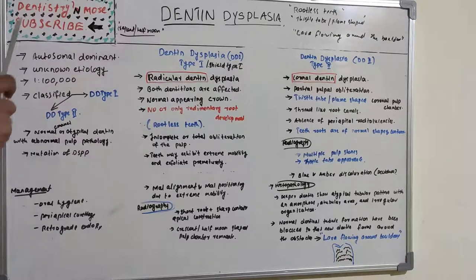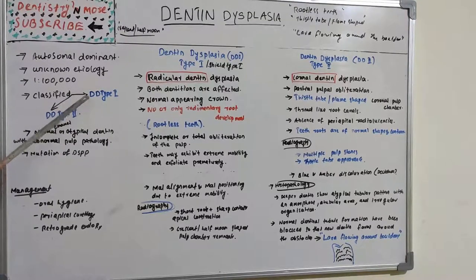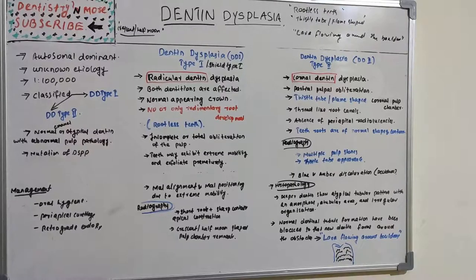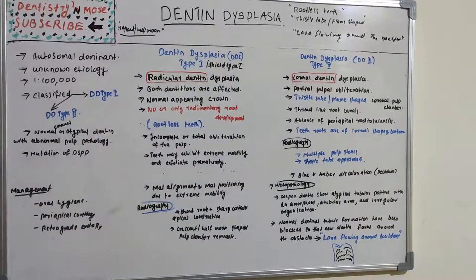Dentine dysplasia is an autosomal dominant condition without a clearly established etiology, though reports suggest a mutation of DSPP — dentine sialoprotein phosphoprotein — could be one reason. It is very rare, seen with an incidence of 1 in 100,000. It is classified as Type 1 and Type 2, and typically presents with normal enamel but atypical dentine and abnormal pulp pathology.